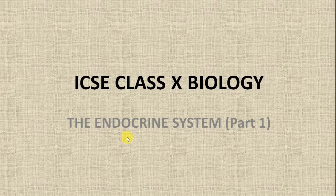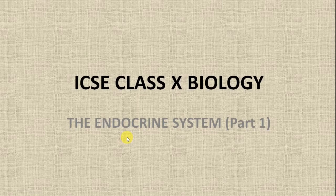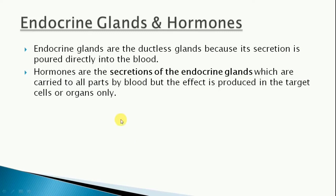Glands are structures which secrete a substance, whether it is enzymes or hormones. Endocrine glands generally secrete hormones. Hormones are a kind of chemical which acts as a regulator, and those hormones help maintain the complex processes in the body.